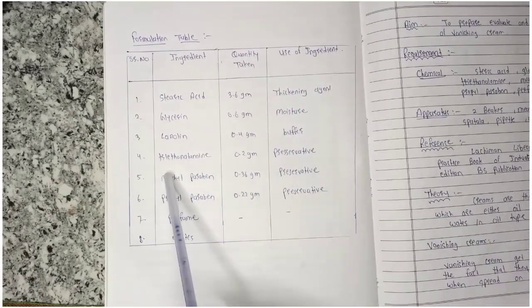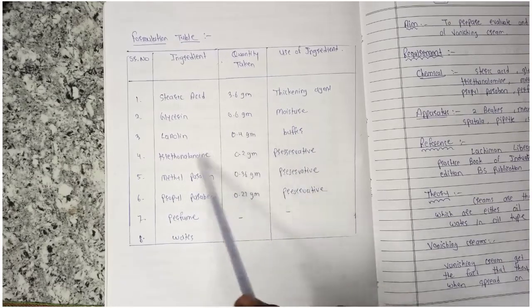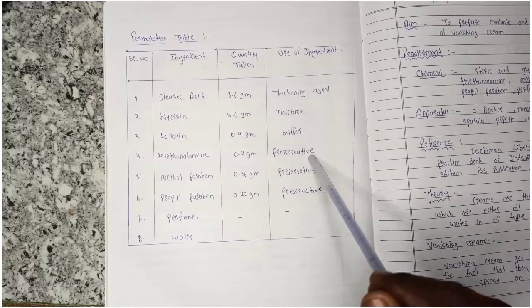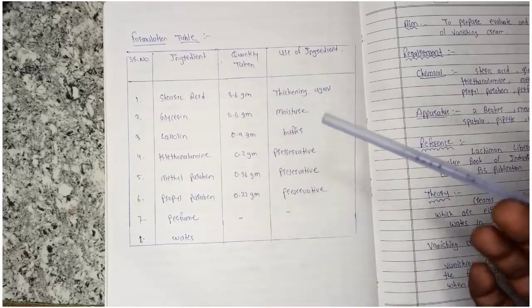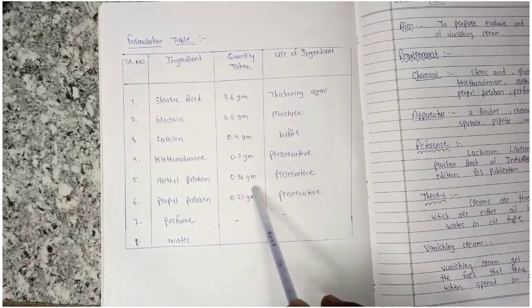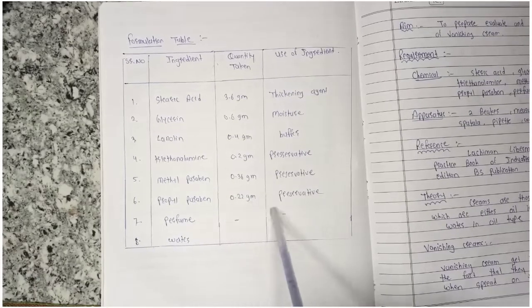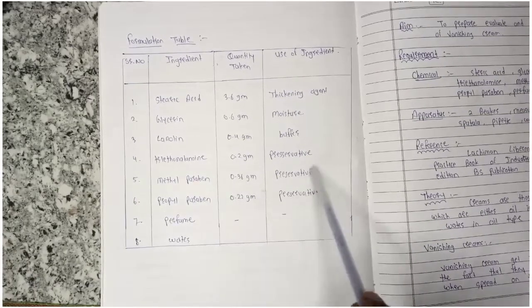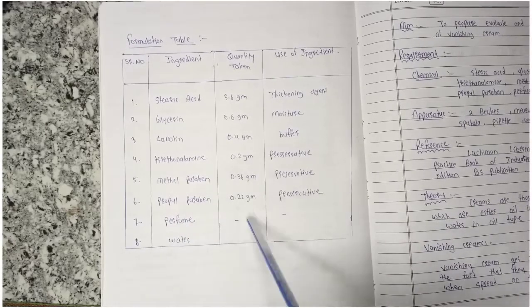Then triethanolamine, 0.2 gram, as a preservative that increases the life of the product. Then methylparaben, 0.3 gram, and propylparaben, 0.22 gram - both are preservatives. Perfume will be used as quantity sufficient, and water.